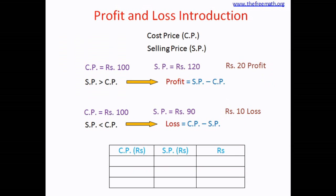Let's solve some practice problems. We have CP — the price at which you buy — and SP — the price at which you sell. If cost price is 500 and selling price is 400, then it's a loss. How much? 500 minus 400 equals 100 rupees of loss.